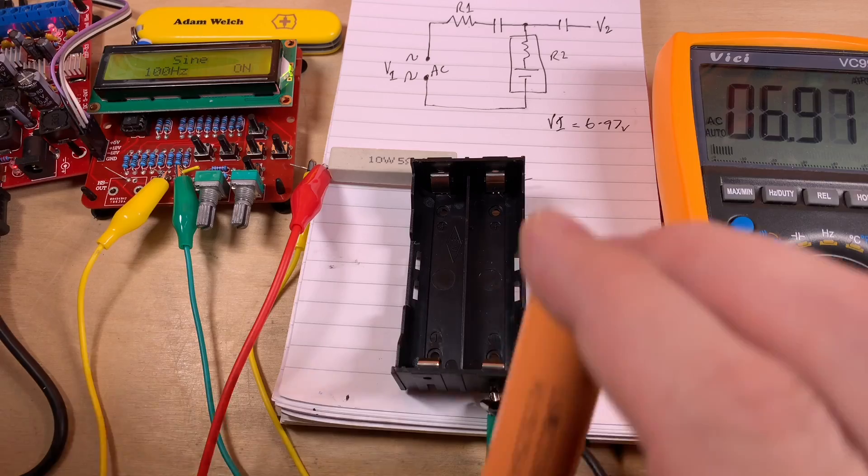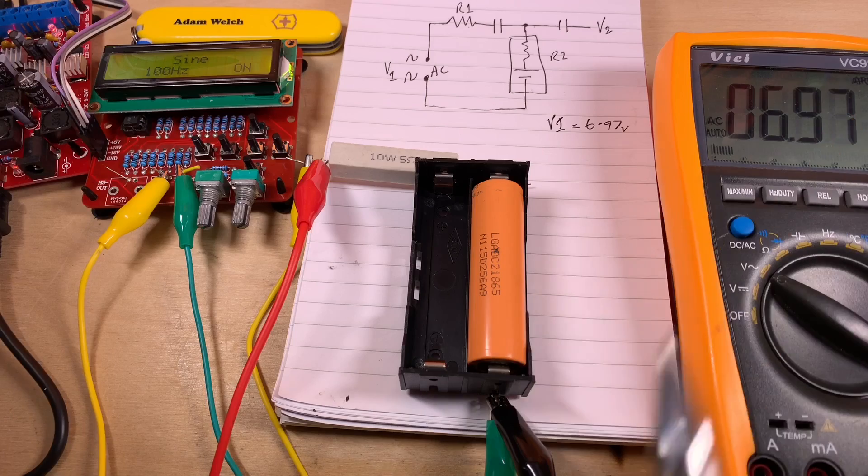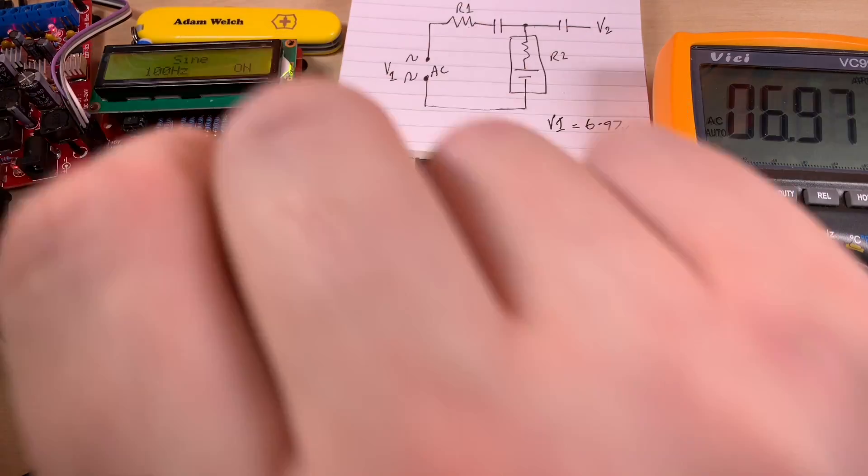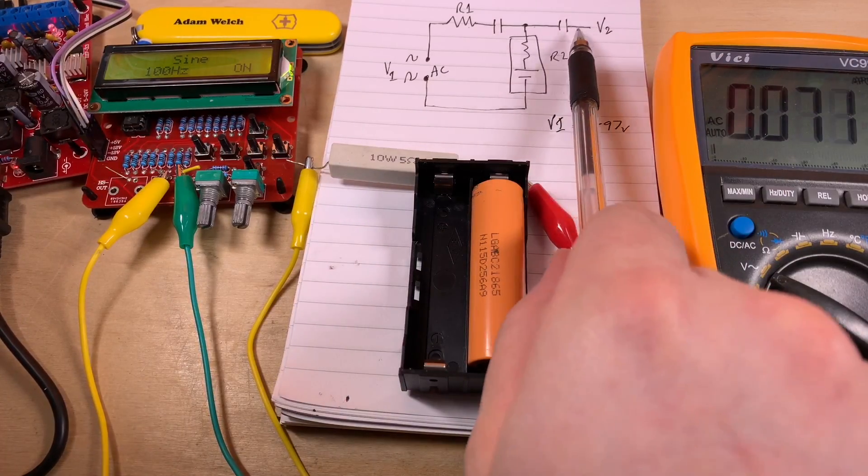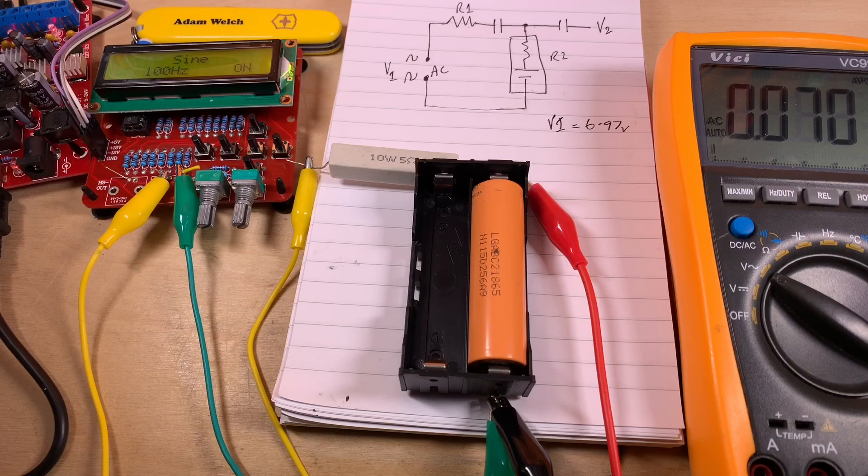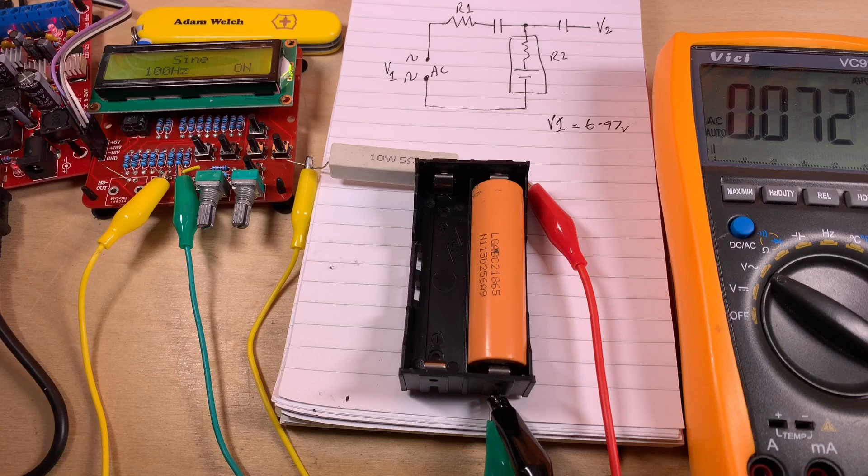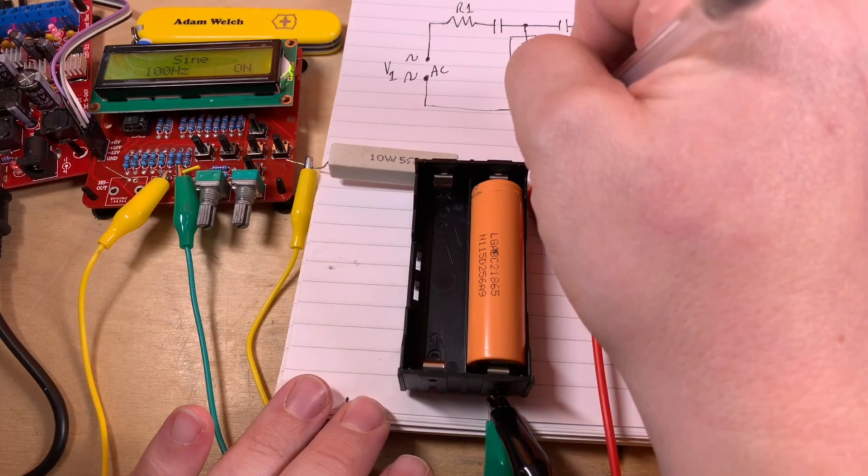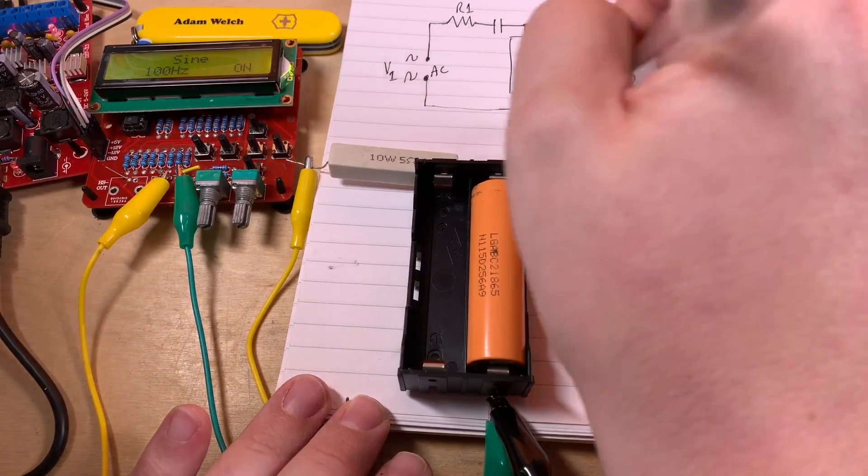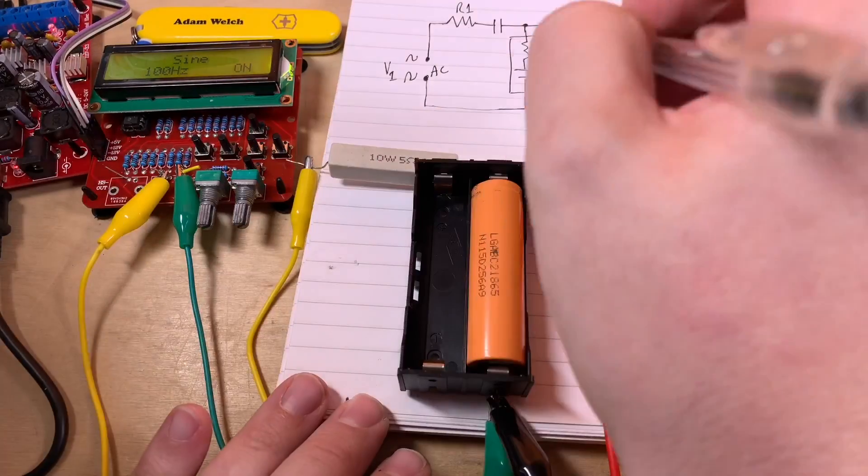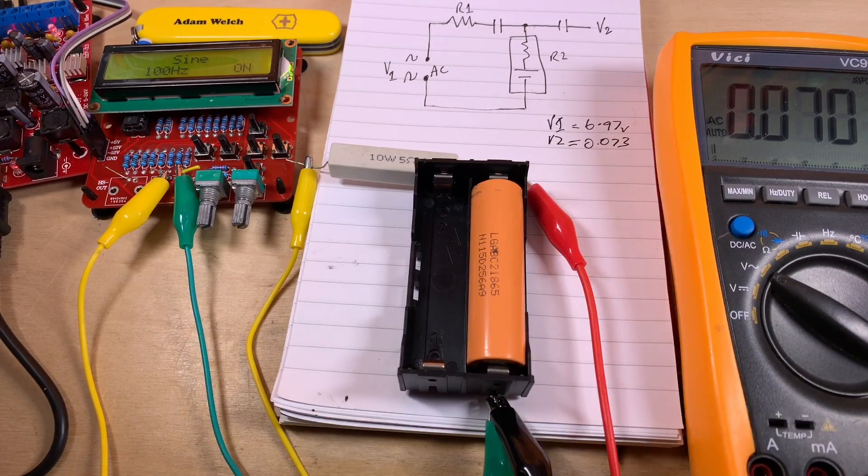Now what I need to do is put my cell inside the cell holder. I'll check that that voltage hasn't changed - yes, 6.97 volts. And now I need to probe this point here, V2, at the other side of that capacitor. And it says 0.073. V2 equals 0.073 volts.